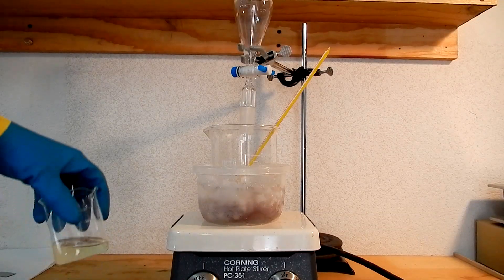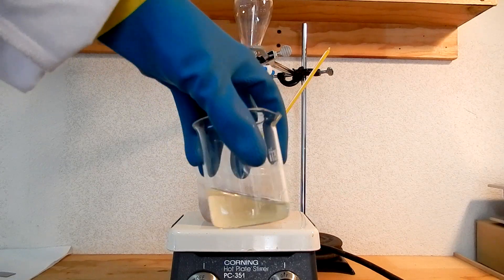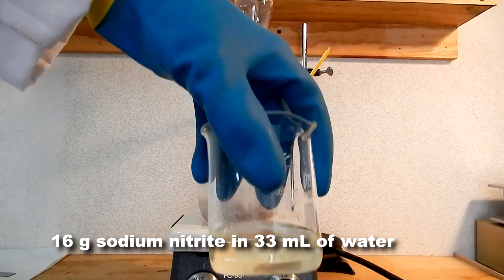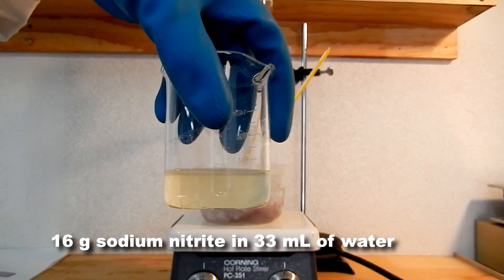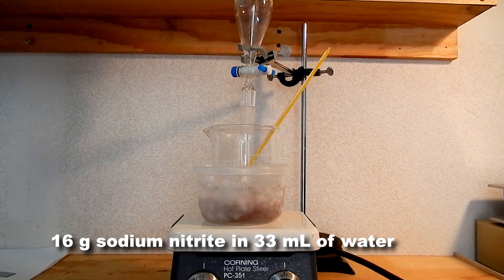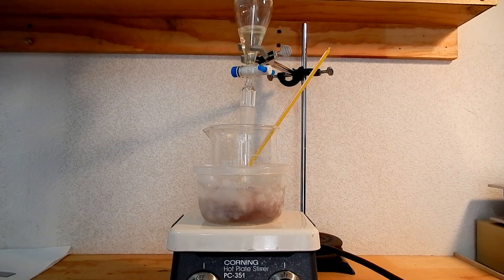Once the mixture reaches the desired temperature, begin to add a solution of 16g of sodium nitrite and 33ml of distilled water using an addition funnel. This forms nitrous acid in situ.